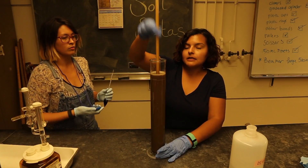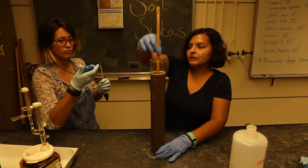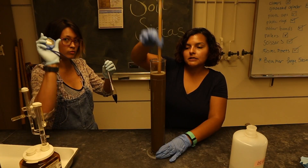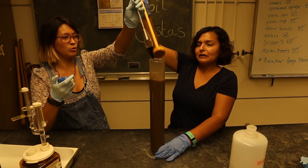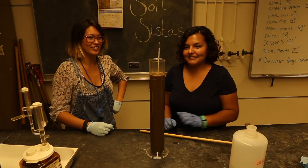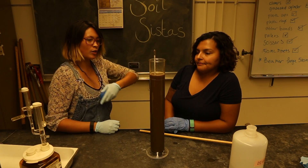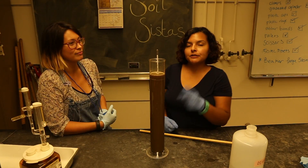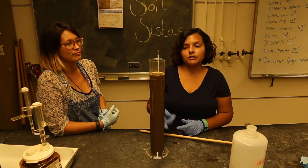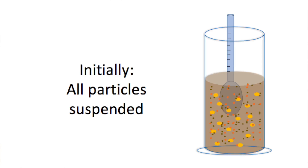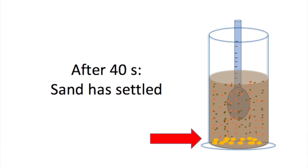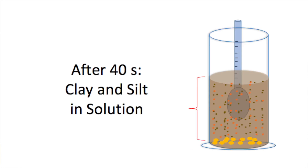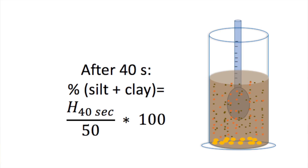Now we're going to use a plunger to re-suspend everything in the sedimentation jar, and then as soon as I take this out, Amy is going to set in the hydrometer and time for 40 seconds. That's our reading — this reading gives us the percent of silt and clay in solution, because after 40 seconds the sand has settled out and only the suspended clay and silt particles are pushing up on the hydrometer. We'll use this reading in our future calculations.